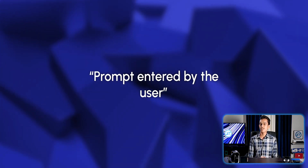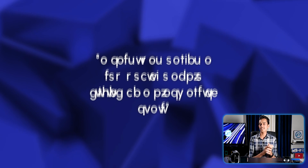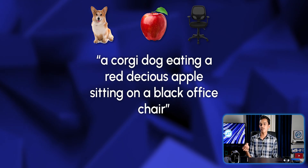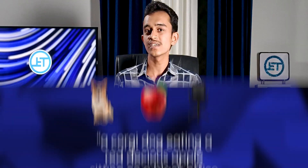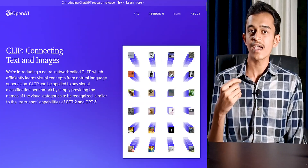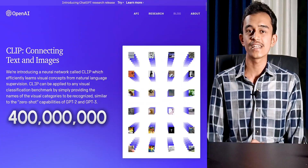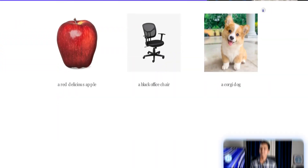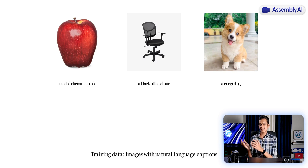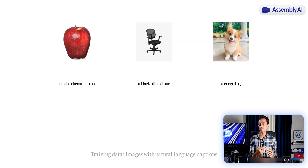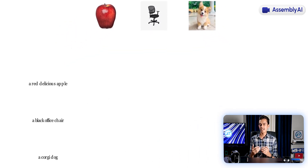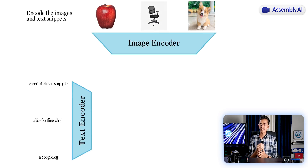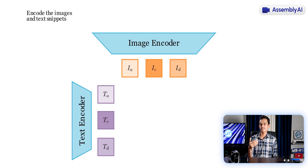The first step is to understand the user's prompt — the text input from the user — and find its connection with the visual representations of the objects defined in that prompt. To do this, DALL-E makes use of CLIP, an AI model trained with nearly 400 million text-image pairs extracted from the internet. Images along with captions matching parts of the prompt are taken from the source dataset and converted into mathematical representations called embeddings using the image and text encoders within CLIP.